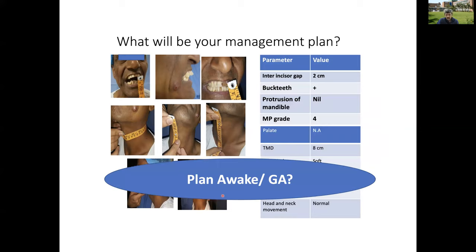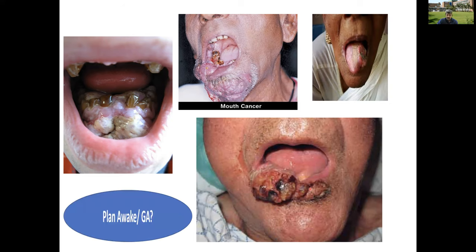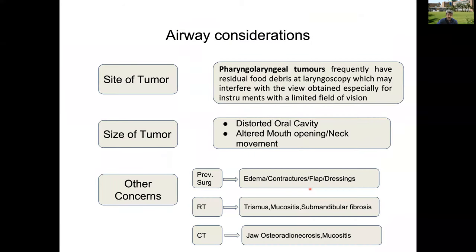Once we assess the patient, the important thing is whether we do an awake intubation or intubation under general anesthesia. We may have a mass in the tongue, lower jaw involvement along with oral cavity, joint involvement, and lip involvement. Whether we do awake or GA will depend upon the airway conditions and considerations.